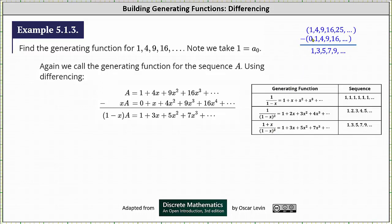Also, if we know the generating series for 1, 4, 9, 16, 25, ... which equals a, then the generating series for 0, 1, 4, 9, 16, ... would be x times a, which on the right side gives us x times 1, which is x. Notice how we no longer have a constant term — or the constant term is 0. We can say we shift the right side to the right, which is why this is called the multiply, shift, and subtract method.